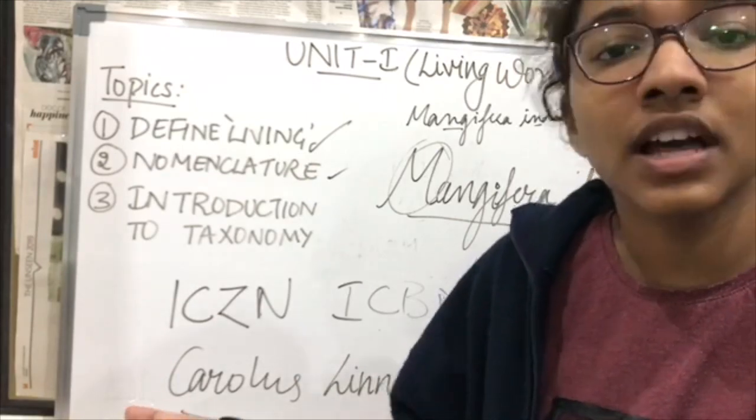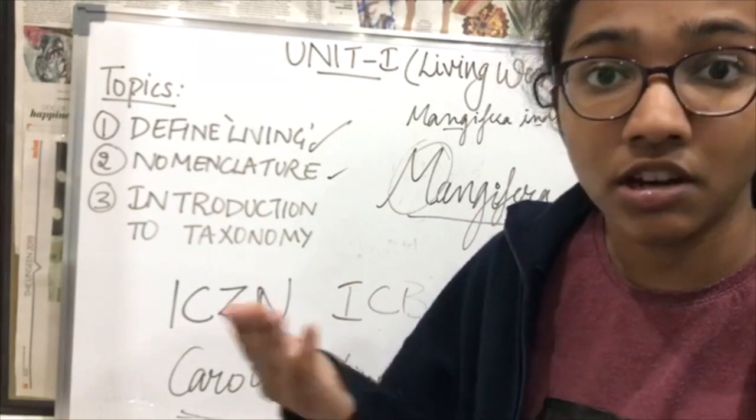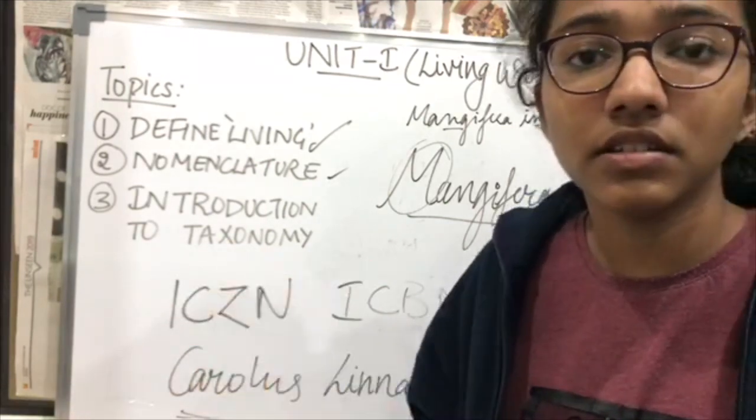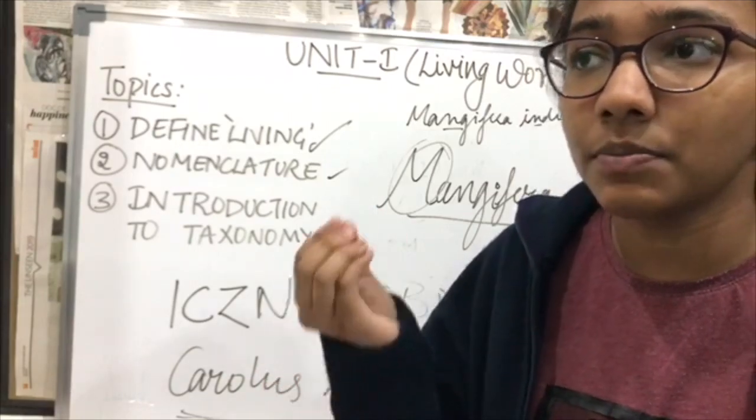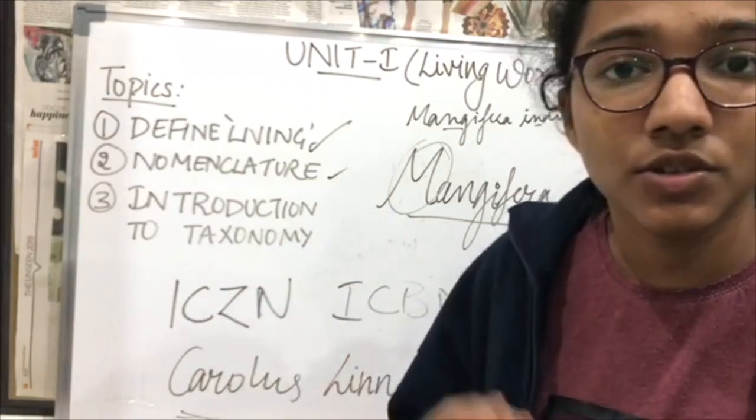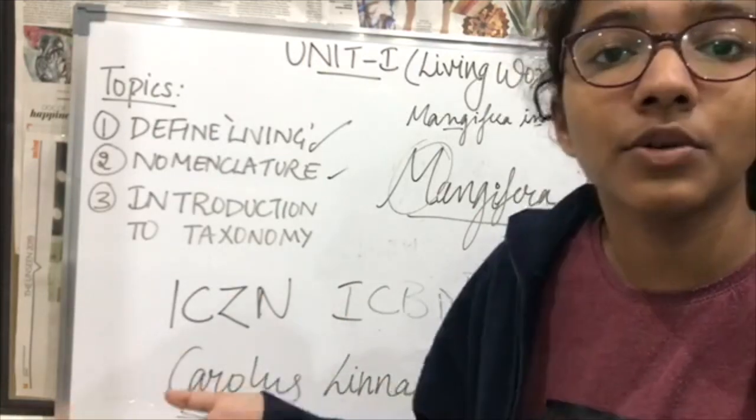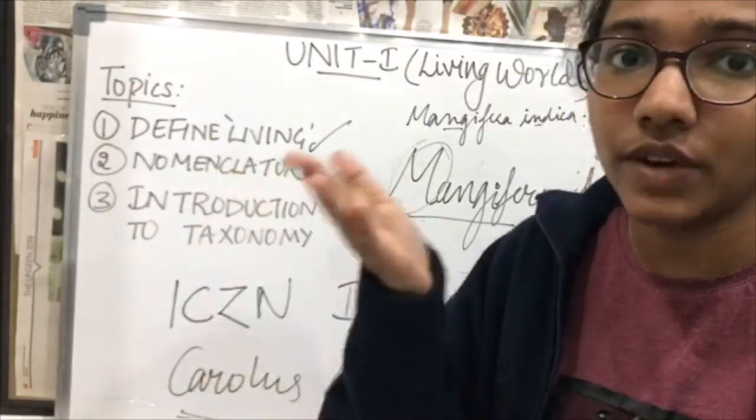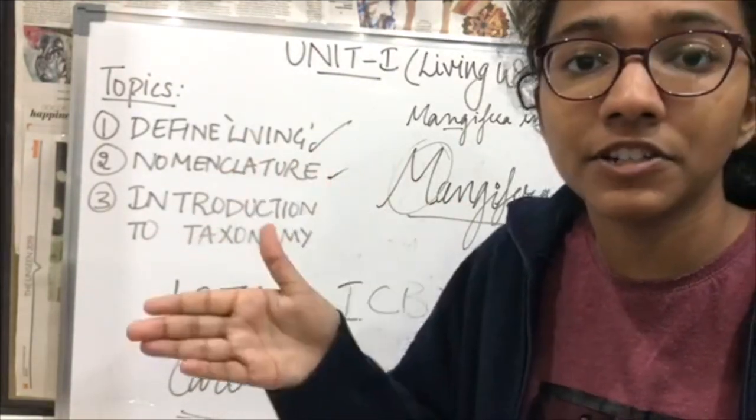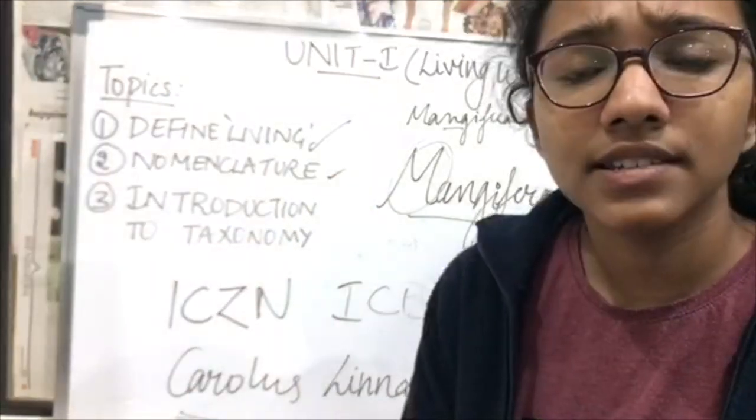When you break up this definition, classification: what would you classify organisms on? The basis of their structure - structure can be of two types, external and internal. The most basic part of an organism is a cell, so cell development. An organism is also defined by its surroundings, its ecological function, so also its ecological information. When you divide the definition into different parts and make sense out of it, it's easier.